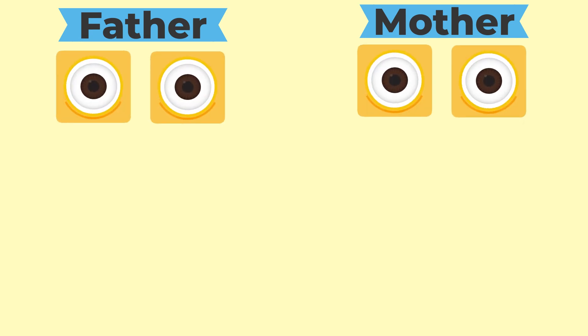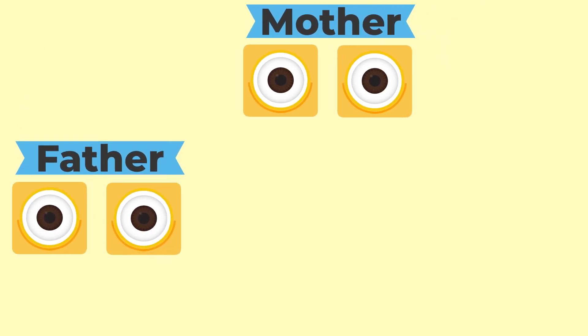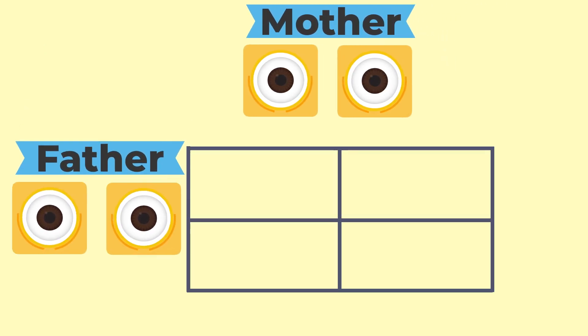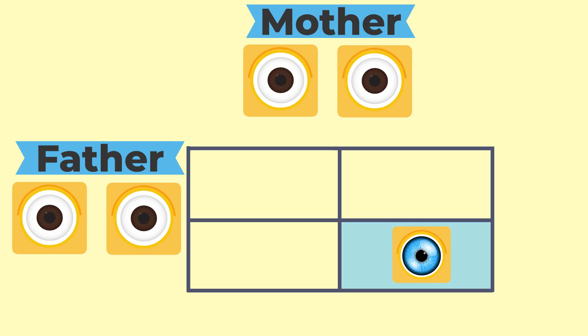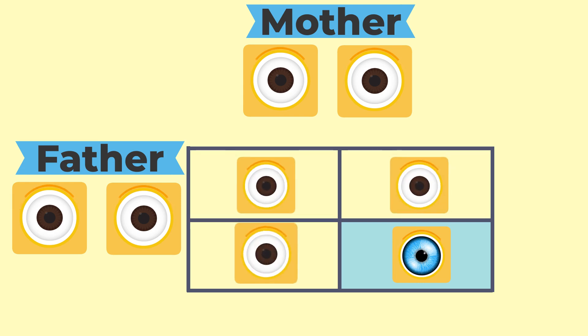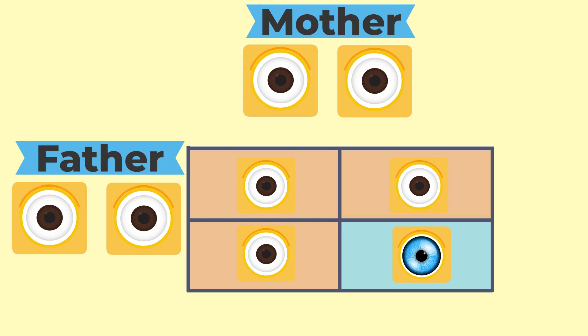Let's say that both male and female parents have a dominant brown eye trait and a recessive blue eye trait. When the genetic materials of both parents combine and are passed on, the chances of the offspring inheriting blue eye color is 25%, or one in four. In contrast, the chances of the offspring having dominant brown eye color are 75%, or three in four.